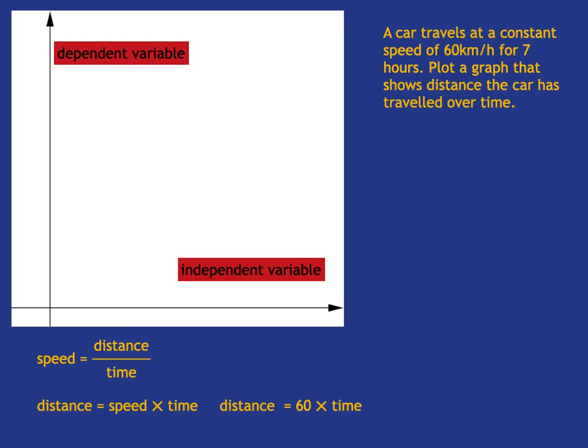We then label our axes. So this time we don't want to call the axes x and y because we're telling a story. So we want to have the labels tell that story. So our independent variable is time. So we're going to label it with a t for time. And we're going to put in brackets that we're going to be measuring our time in hours. And our dependent variable is distance. And we're going to be having that in kilometers.